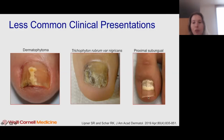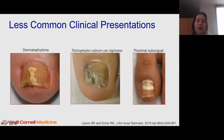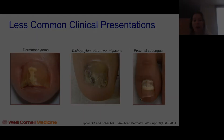And then there's the proximal subungual subtype, where the fungus invades near the cuticle as opposed to near the hyponychium. These are generally harder to treat than the distal-lateral subungual types.